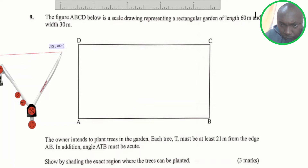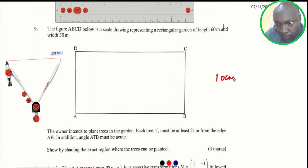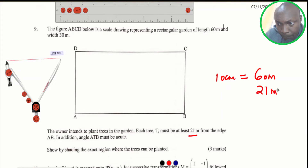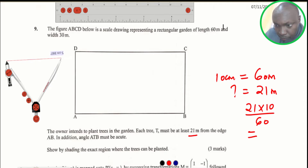To do that, we take the measurement. The length when you measure in centimeters is 10 centimeters, which represents 60 meters. So what about 21 meters? We cross multiply: 21 multiplied by 10 divided by 60. When you work that out, you get 3.5. So 21 meters is going to be represented by 3.5 centimeters.